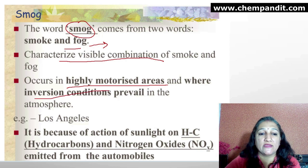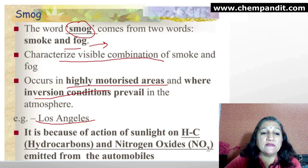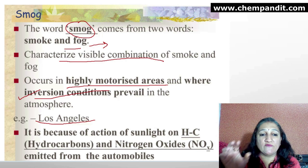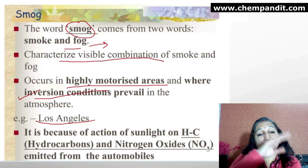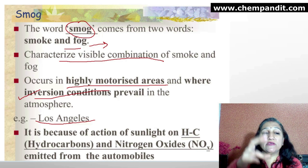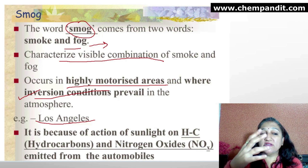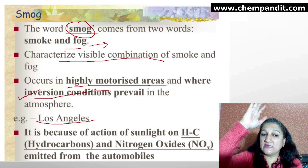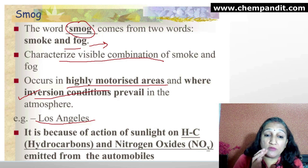There are also temperature inversion conditions that prevail in the atmosphere — for example, in Los Angeles. In normal conditions, the air just above the earth's surface is warm because the earth re-radiates sunlight, and the air above is cold. So the convection cycle is normal. This means air pollutants are dispersed upward and carried away by wind — these are very good conditions because air pollutants don't remain near the earth.